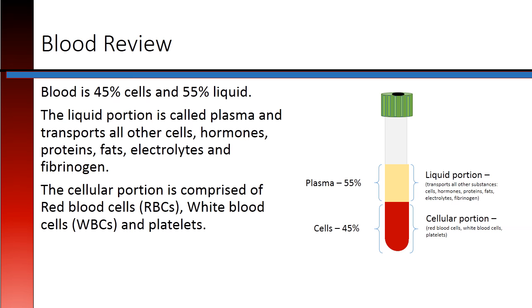Blood Review: Blood is 45% cells and 55% liquid. The liquid portion is called plasma, and it transports all other cells, hormones, proteins, fats, electrolytes, and fibrinogen. The cellular portion is comprised of red blood cells, white blood cells, and platelets.